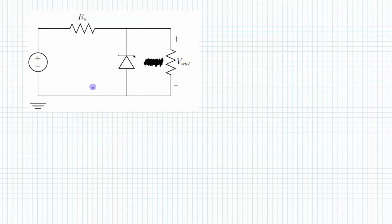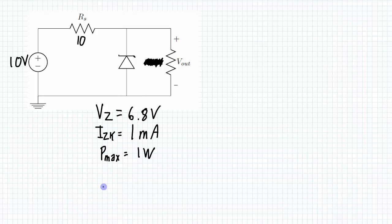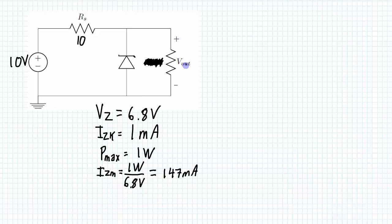Let's look at a voltage regulation example with a 10-volt source and a current-limiting resistance of 10 ohms. The Zener diode has a Zener voltage of 6.8 volts, a knee current of 1 milliamp (the minimum current needed to turn it on), and a maximum power dissipation of 1 watt. That means the maximum current through the Zener diode is 1 W / 6.8 V = 147 milliamps.